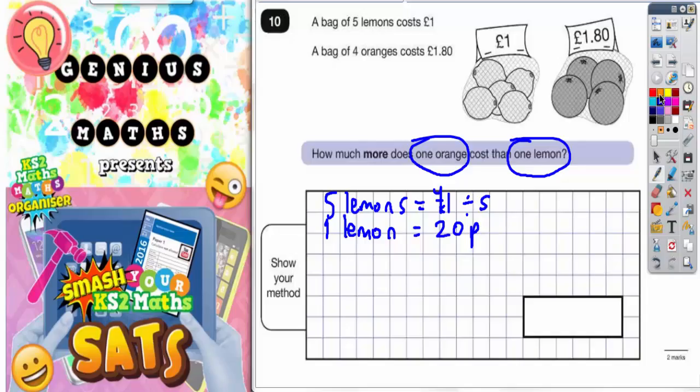As for the oranges, I've got four oranges and four oranges equals £1.80. So we need to get to one orange. Well, four oranges is £1.80. If you half that, you'd get two oranges. And half of £1.80, well half of £1 will be 50p and half of 80p would be 40p.